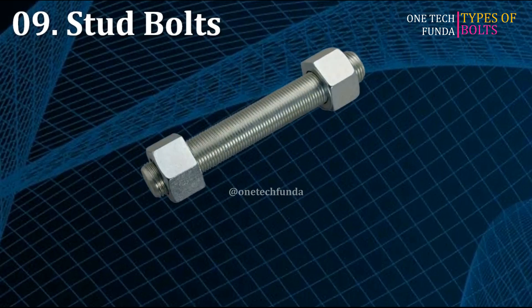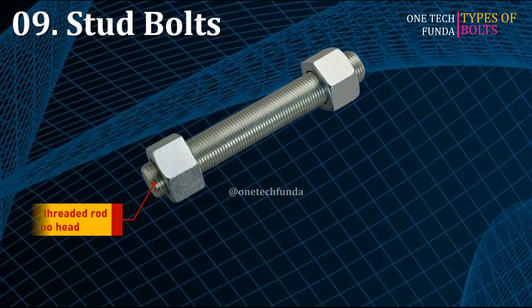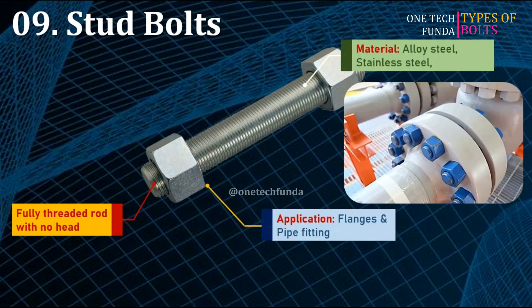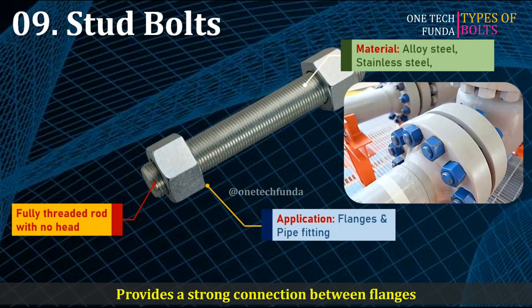Stud bolts are fully threaded rods with no head, used in applications like flanges or pipe fittings. Materials include alloy steel and stainless steel. The main advantage is they provide a strong connection between flanges.